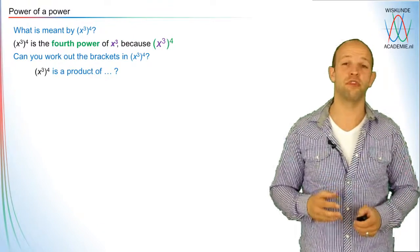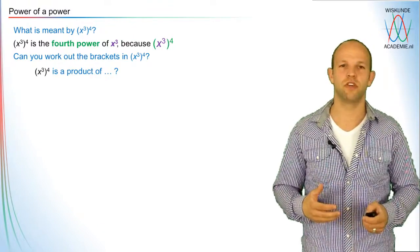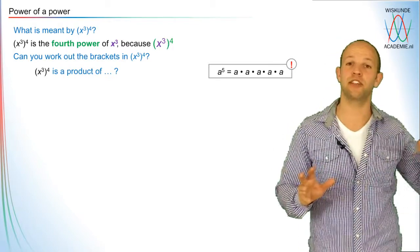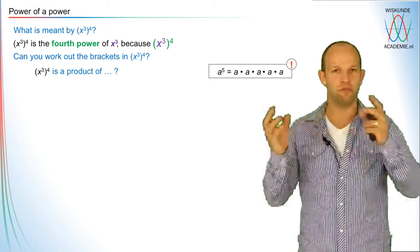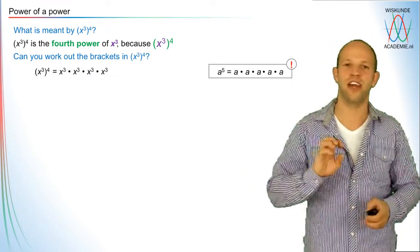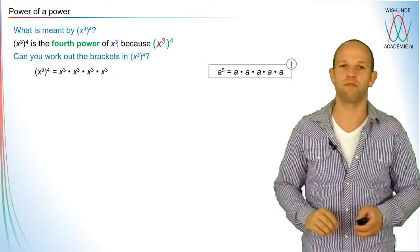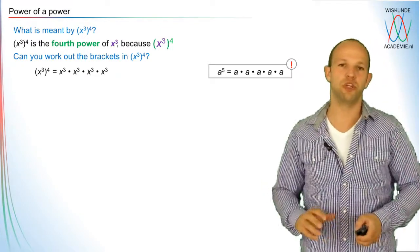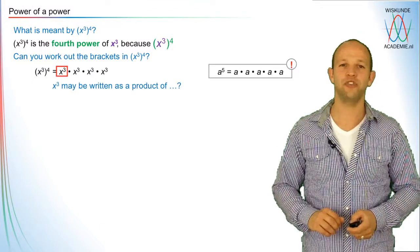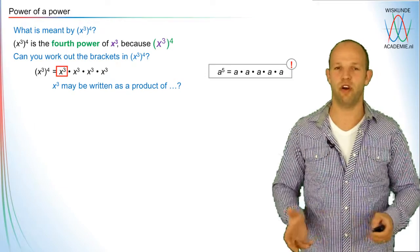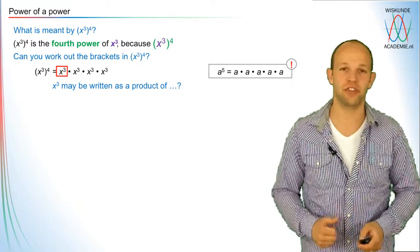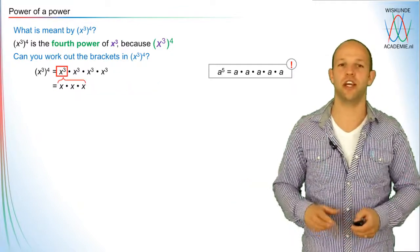So x to the power three, to the power four — what is this a part of? Knowing that a to the power five can be written as a times a times a times a times a, the same thing applies: x to the power three, to the power four, can be written as x cubed times x cubed times x cubed times x cubed. And each x cubed can be further expanded as x times x times x.